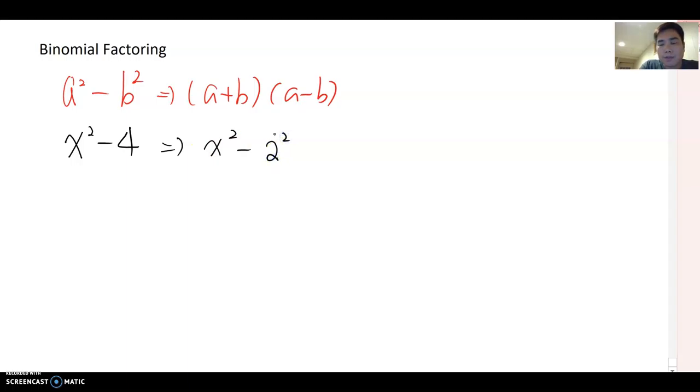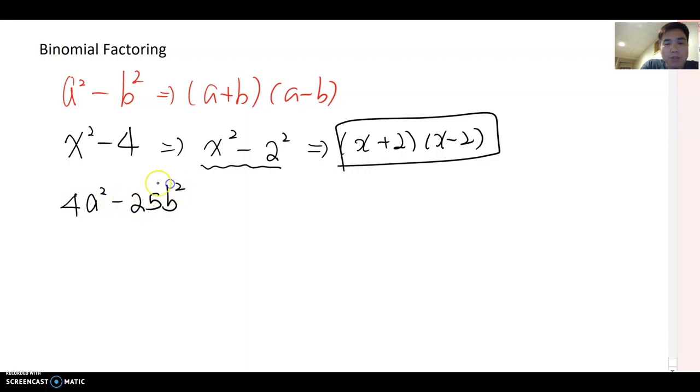One example: x² - 4. You can rewrite it as x² - 2². This form looks like a² - b², where a is x and b is 2. Therefore, you can factor it as (x + 2)(x - 2).